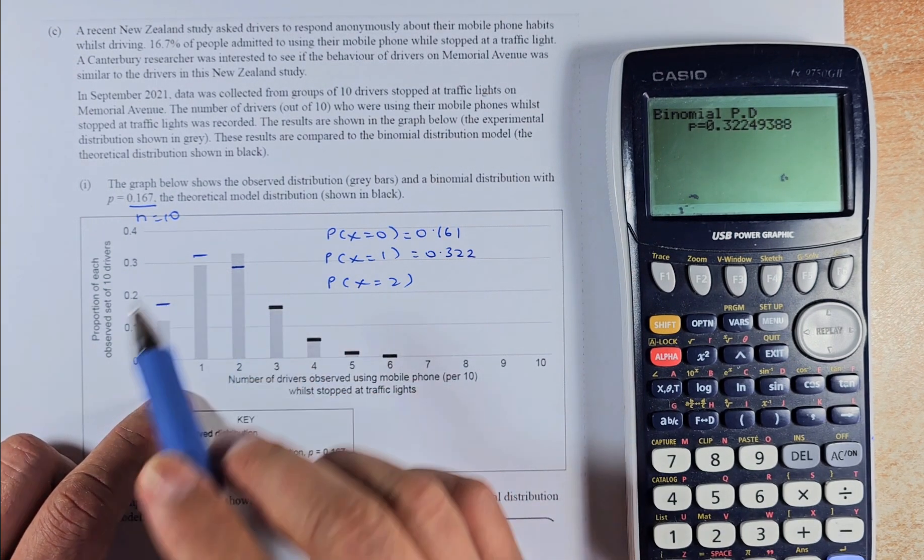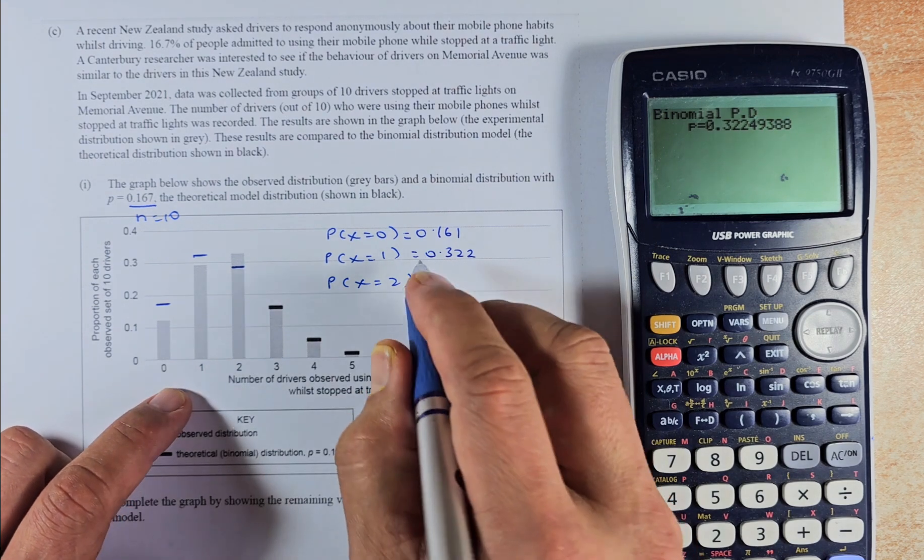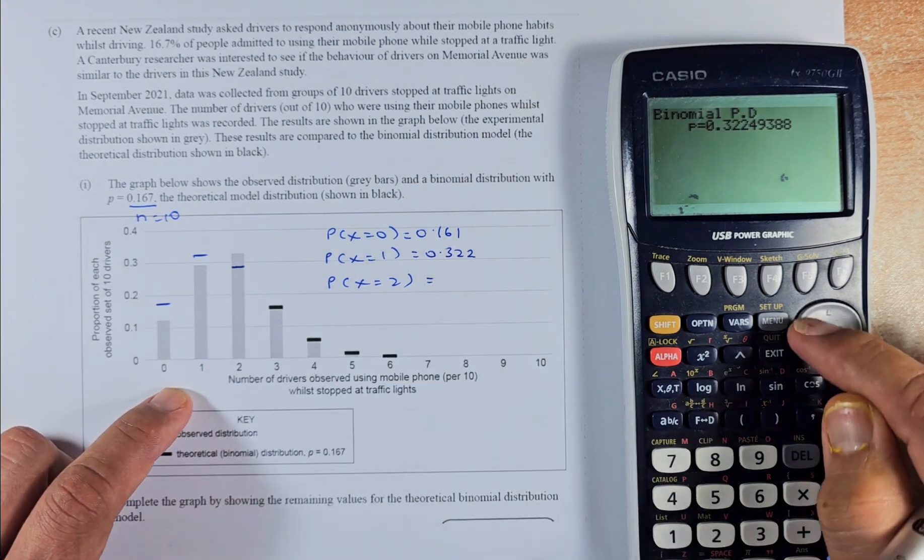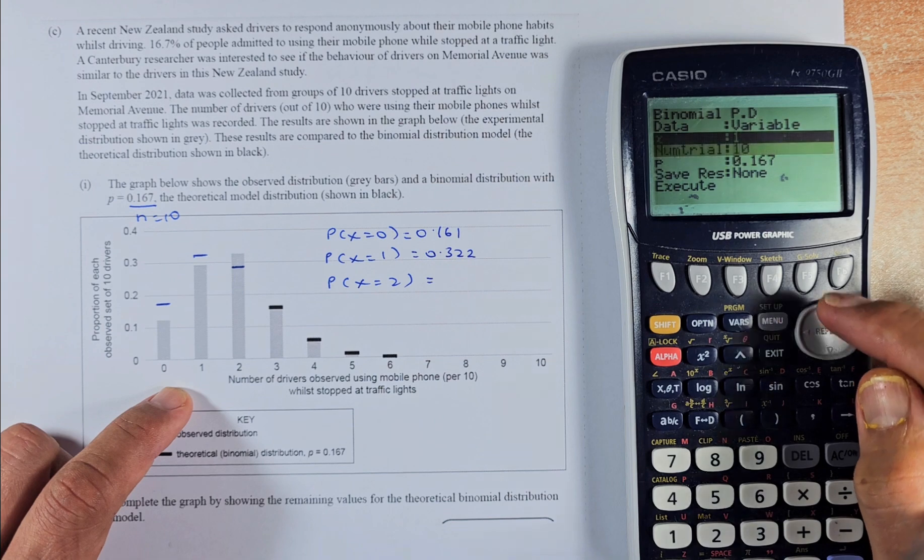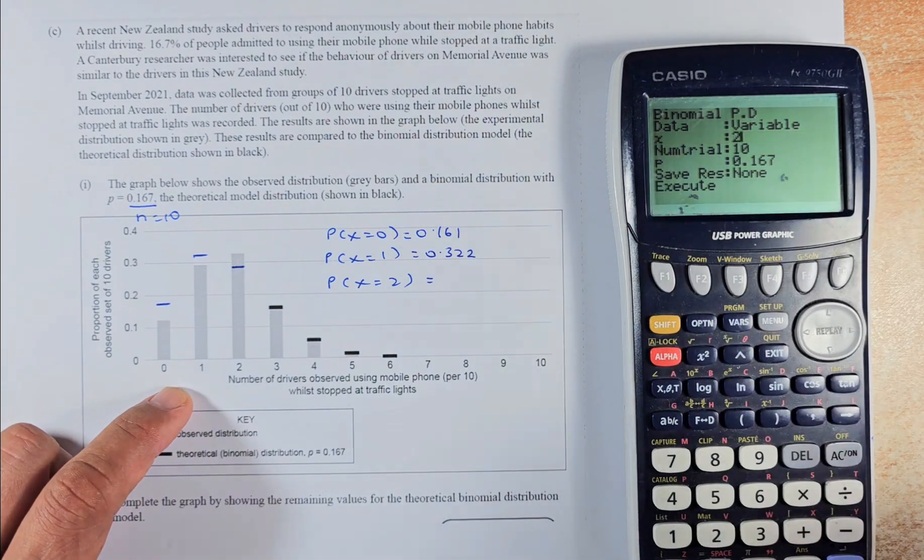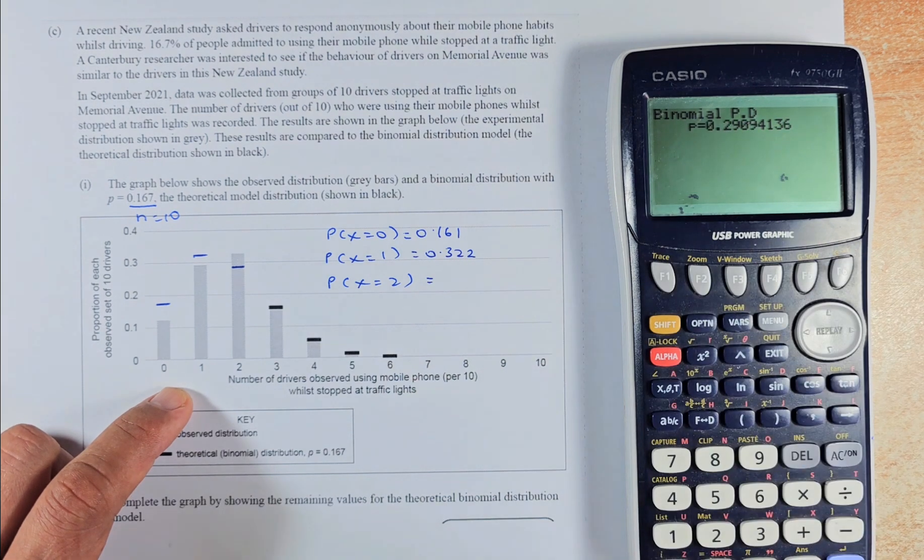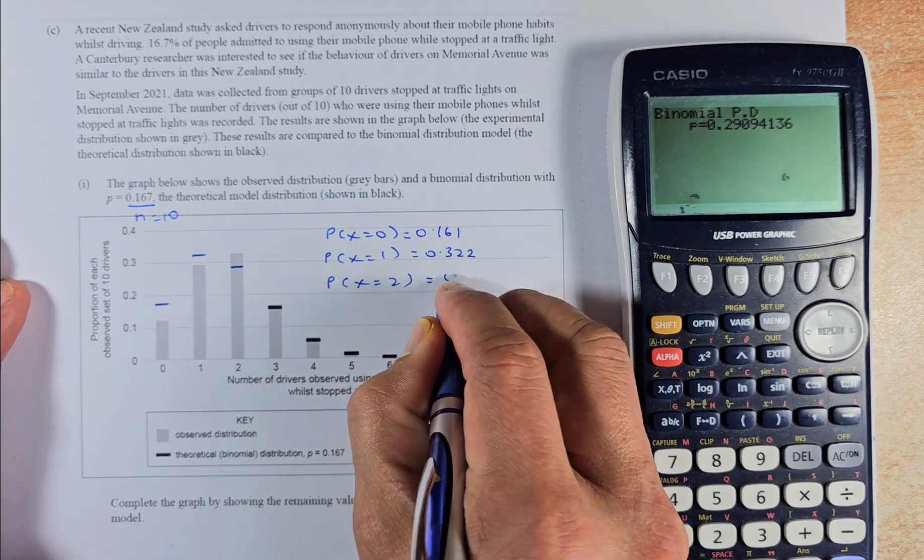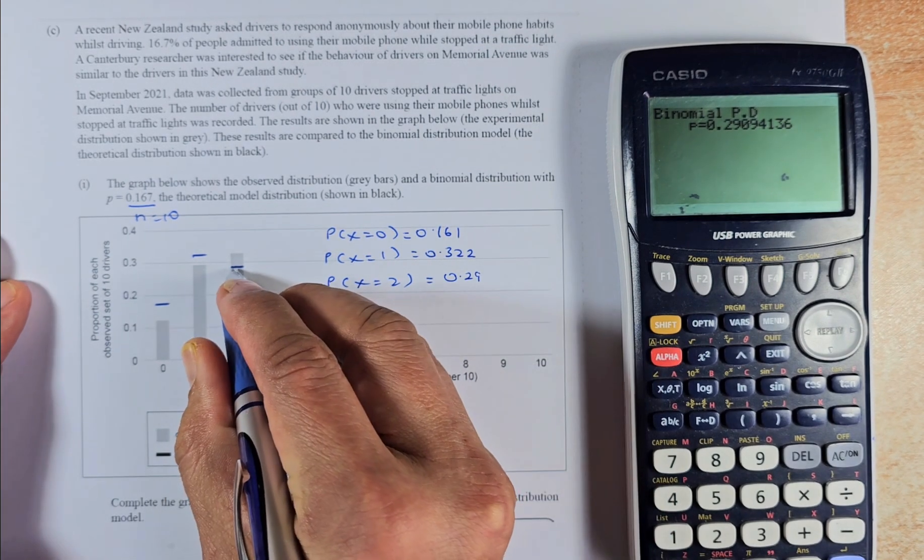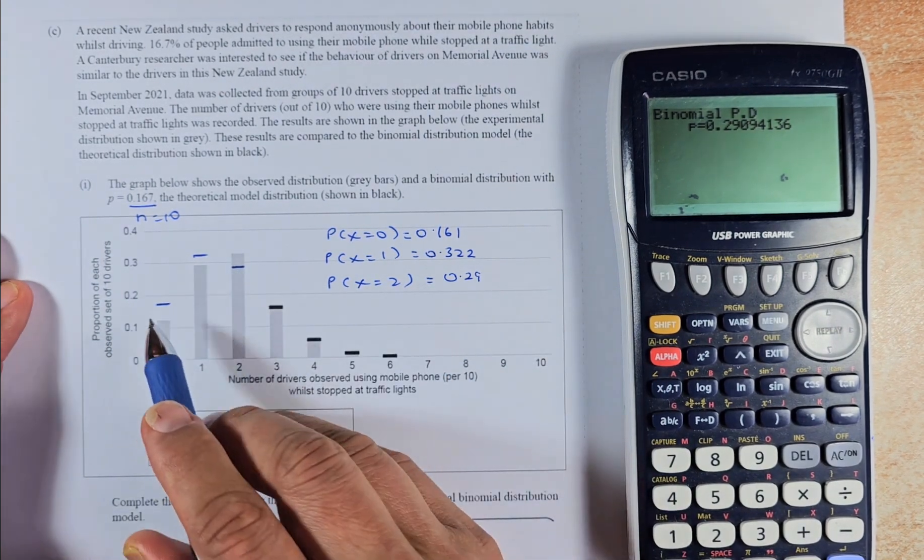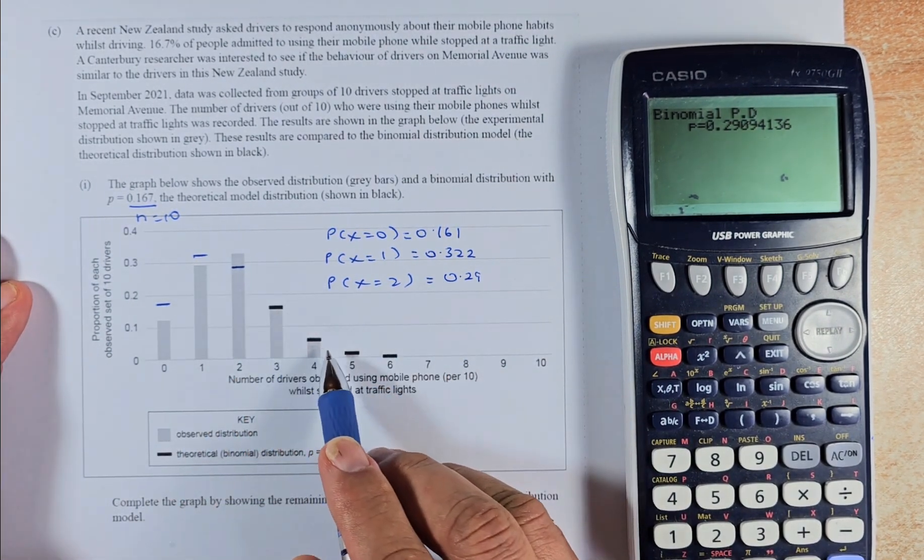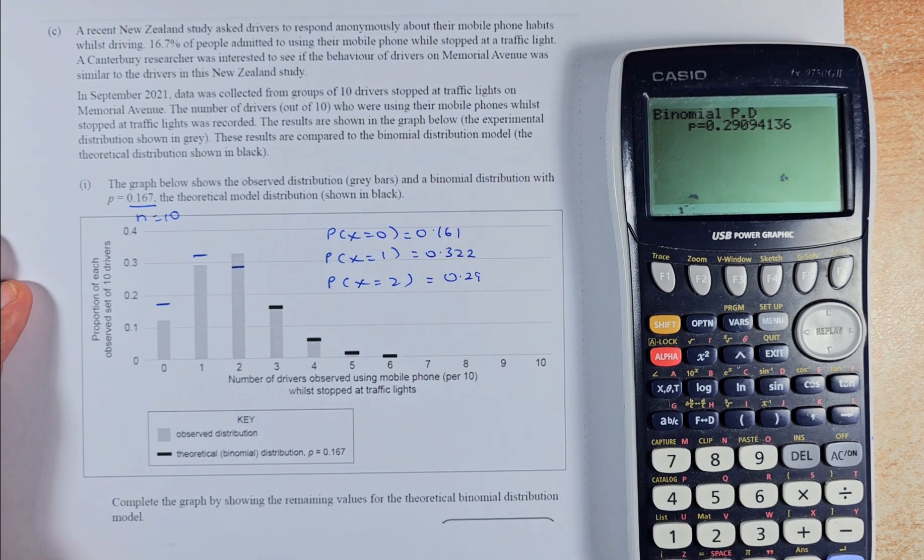And for x equal to 2, we do the same thing. Go to exit. And this time, x equal to 2, the other variables are the same. So we're going to just change the x equal value. Execute, execute. And the answer is 0.29. So that is why that point is just below the 3. It's 0.29. So all these points are the theoretical probability of the binomial distribution. The grey one is the observed number.